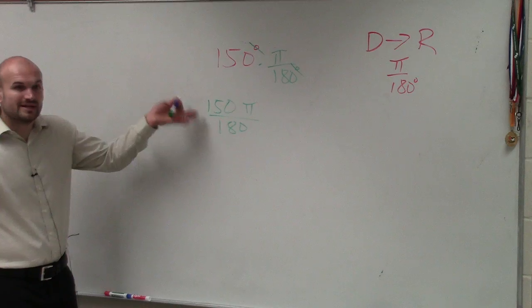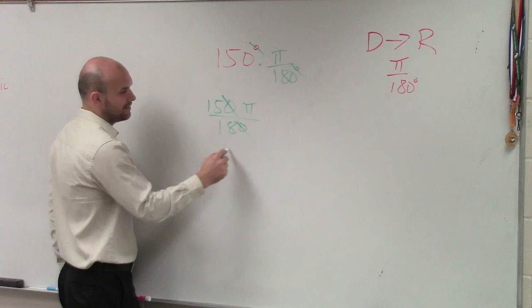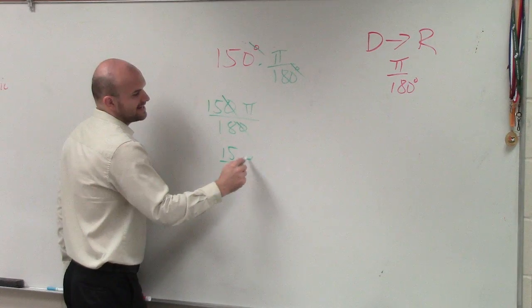Now again, ladies and gentlemen, we need to simplify this fraction. So obviously, we can say that the zeros, now we're left with 15 over 18 pi.